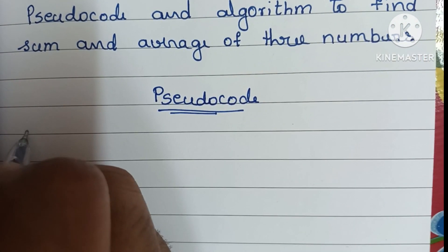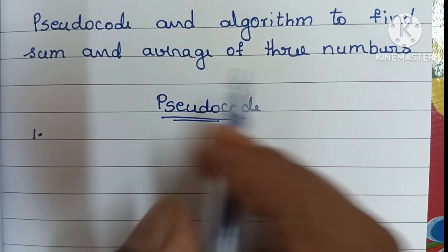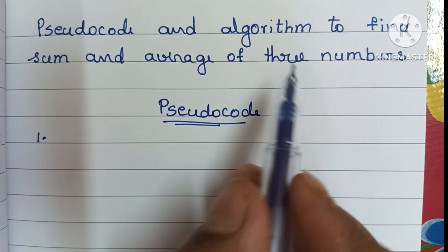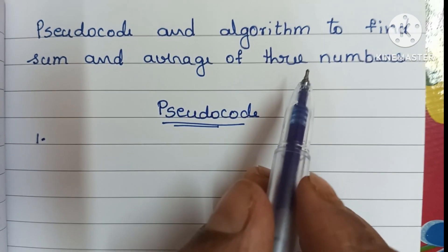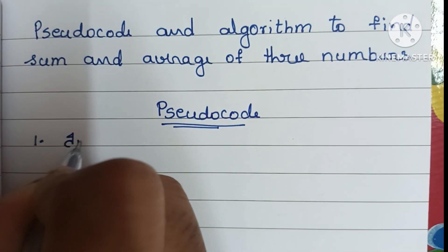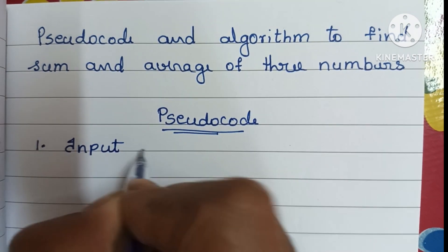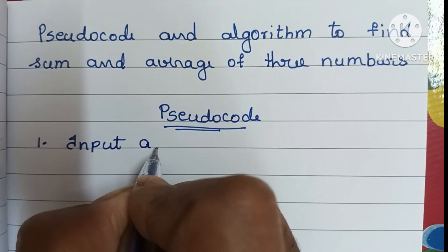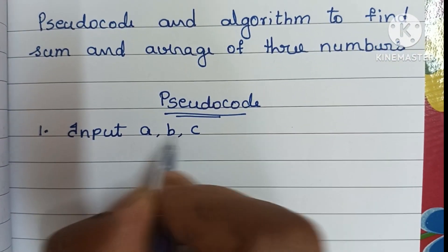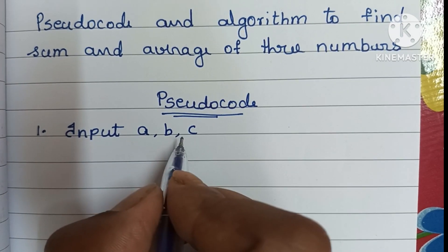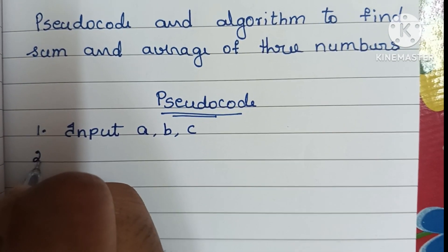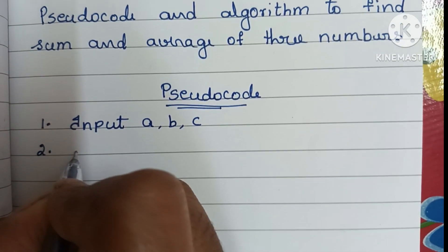To find sum and average of three numbers, first we have to input three numbers — that is a, b, and c — where a, b, c represent three numbers.